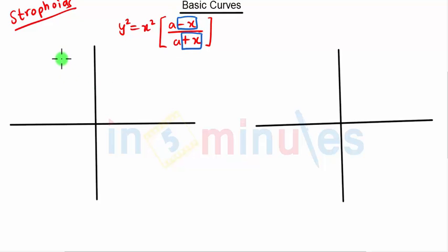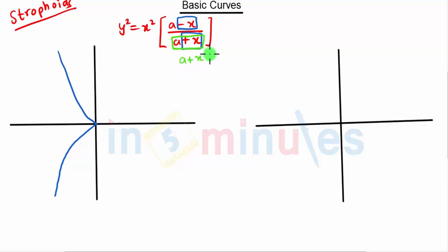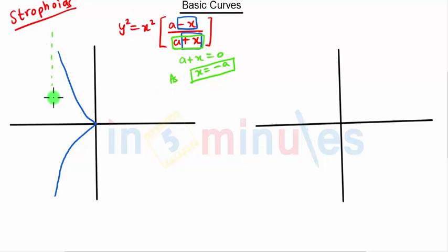As I told you, whenever we have a denominator we put that denominator equal to zero. So when we put a+x = 0, we get x = -a. So x = -a is our asymptote. This curve will open towards the negative x-axis and go up till the asymptote at x = -a.